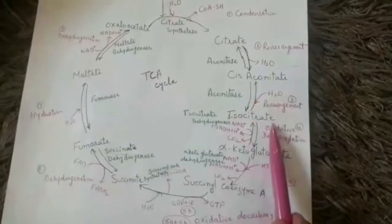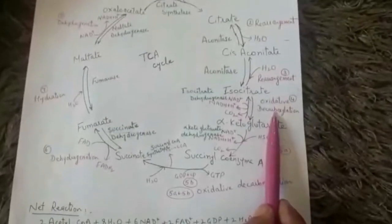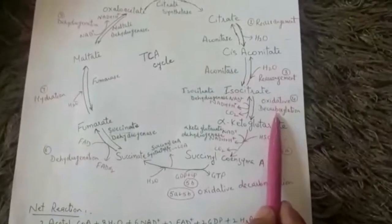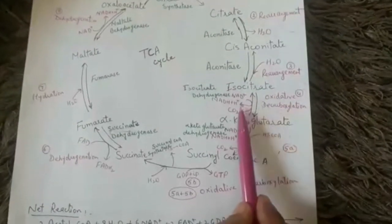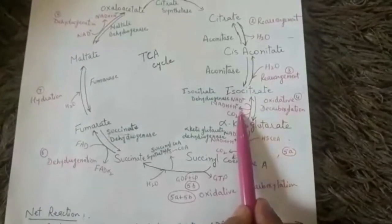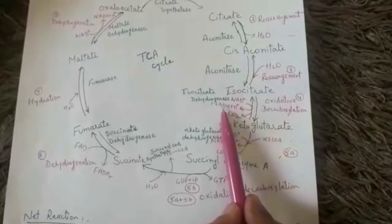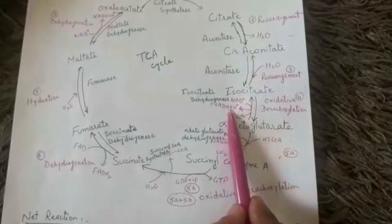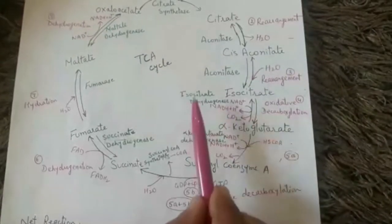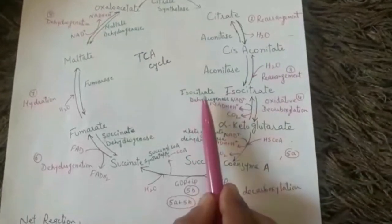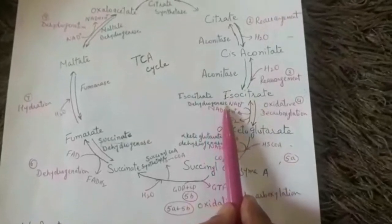The fourth step is oxidative decarboxylation: isocitrate loses carbon dioxide and a pair of hydrogen atoms, which are picked up by NAD, reducing it to NADH. Because this involves dehydrogenation, the enzyme is called isocitrate dehydrogenase.